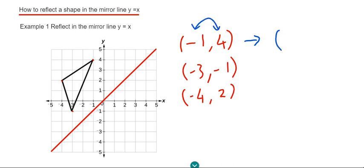Okay, so I'll just swap these around. So our first corner would be at 4, minus 1.